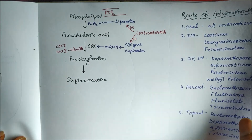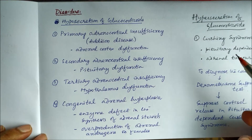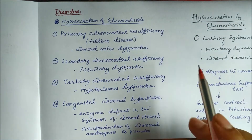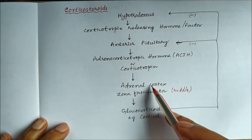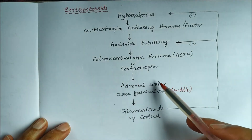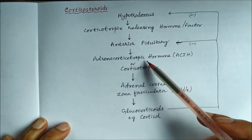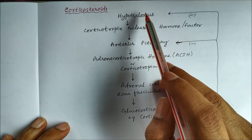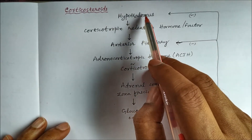Disorders associated with corticosteroids can be divided into two groups: hyposecretion or hypersecretion of glucocorticoids. For hyposecretion: since glucocorticoids are secreted from the adrenal cortex, dysfunction there is primary. Since the adrenal cortex is stimulated by ACTH from the anterior pituitary, anterior pituitary dysfunction is secondary. Since the hypothalamus releases the regulatory factor, hypothalamic dysfunction is tertiary.